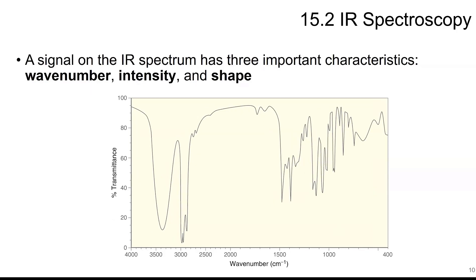So a signal on the IR spectrum has three important characteristics. There's the wave number. So certain types of functional groups will show up at specific wave numbers. We have intensity. So there are strong peaks here versus the weaker ones. These are weaker peaks, so they're not as intense. And then the shape of the peak. We have sharp peaks, and these are broad, so that tells us different things as well.